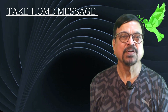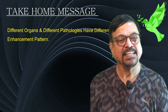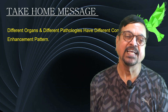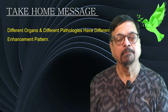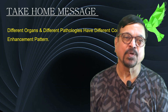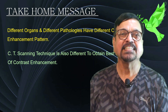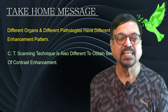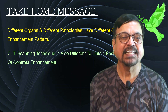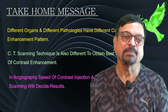The take-home message is that contrast is an artificially introduced agent that enhances tissues. Different tissues — normal and abnormal — enhance in different ways, allowing identification of what is normal, what is abnormal, and what pathology is present. Different organs and pathologies have different contrast enhancement patterns. The CT scanning technique also varies to obtain the best results, whether arterial or venous phase. In pulmonary angiography, technique accounts for 80% of the result — if the technique is wrong, everything can go wrong.